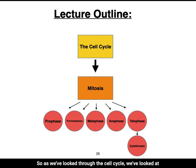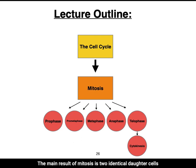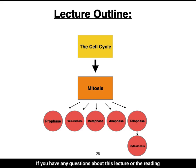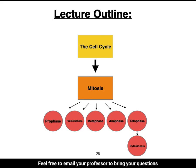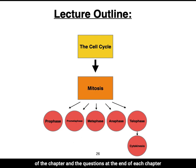As we've looked through the cell cycle, we've covered the four main stages — G1, S, G2, and mitosis — as well as the five steps of mitosis and the mitotic spindle. The main result of mitosis is two identical daughter cells with the same DNA content. If you have any questions about this lecture or the assigned reading, please email your professor, bring questions to office hours or class, or reach out to the learning assistant. Use the assisted reading questions and end-of-chapter questions to prepare for the quiz and test on this material.